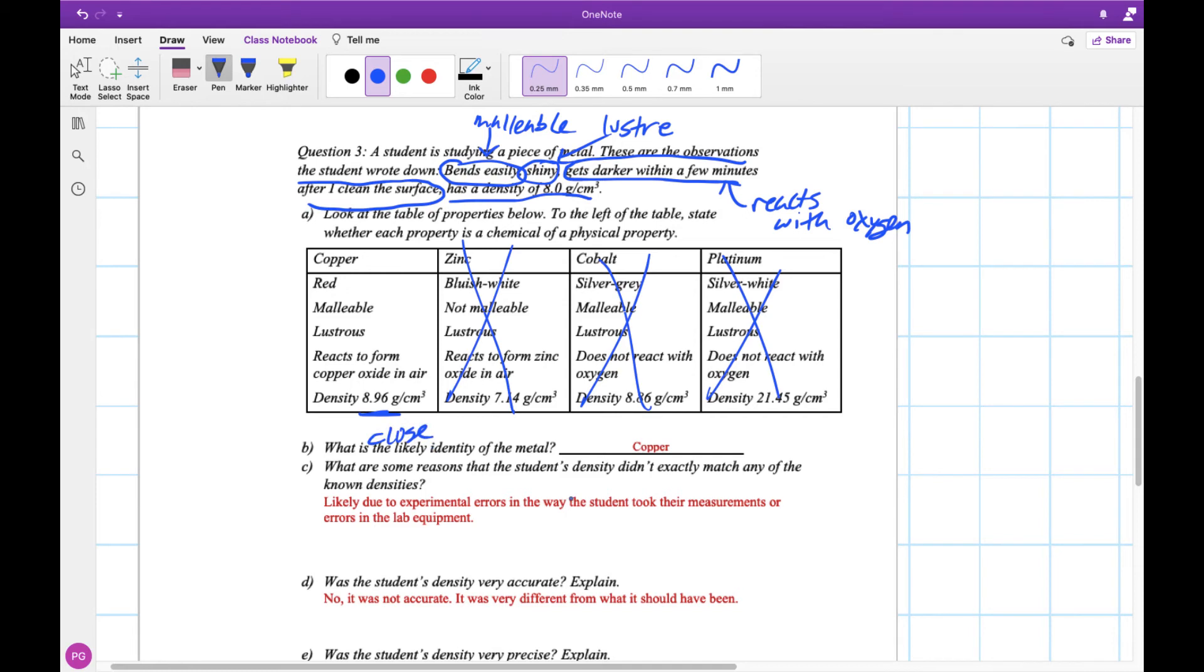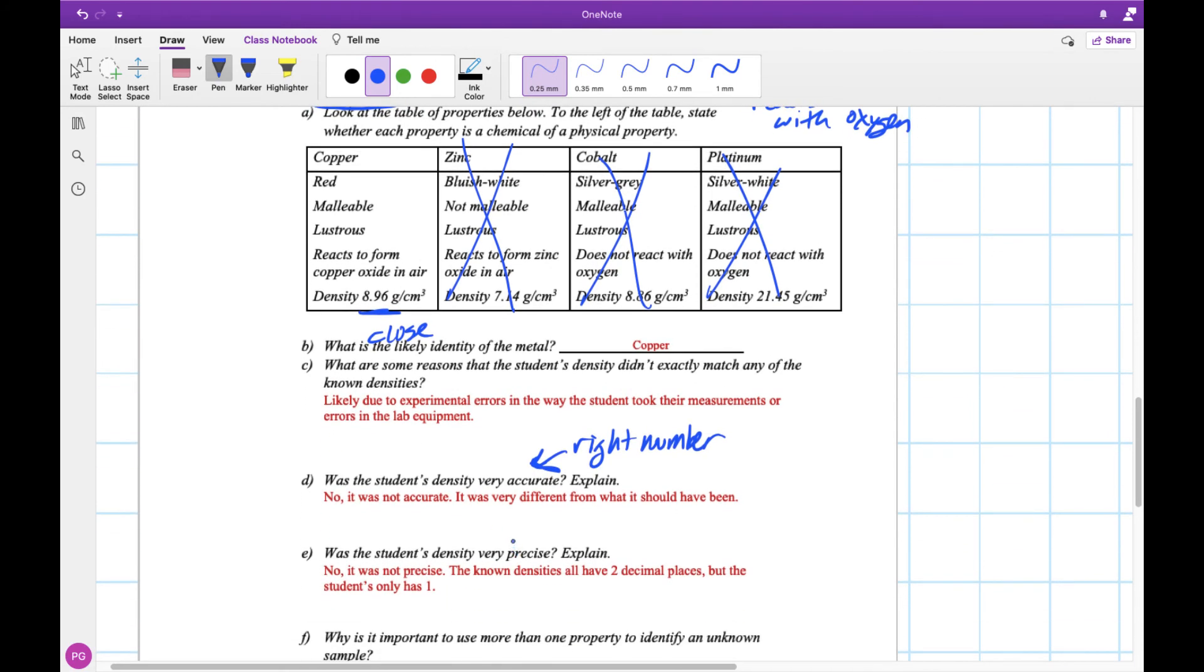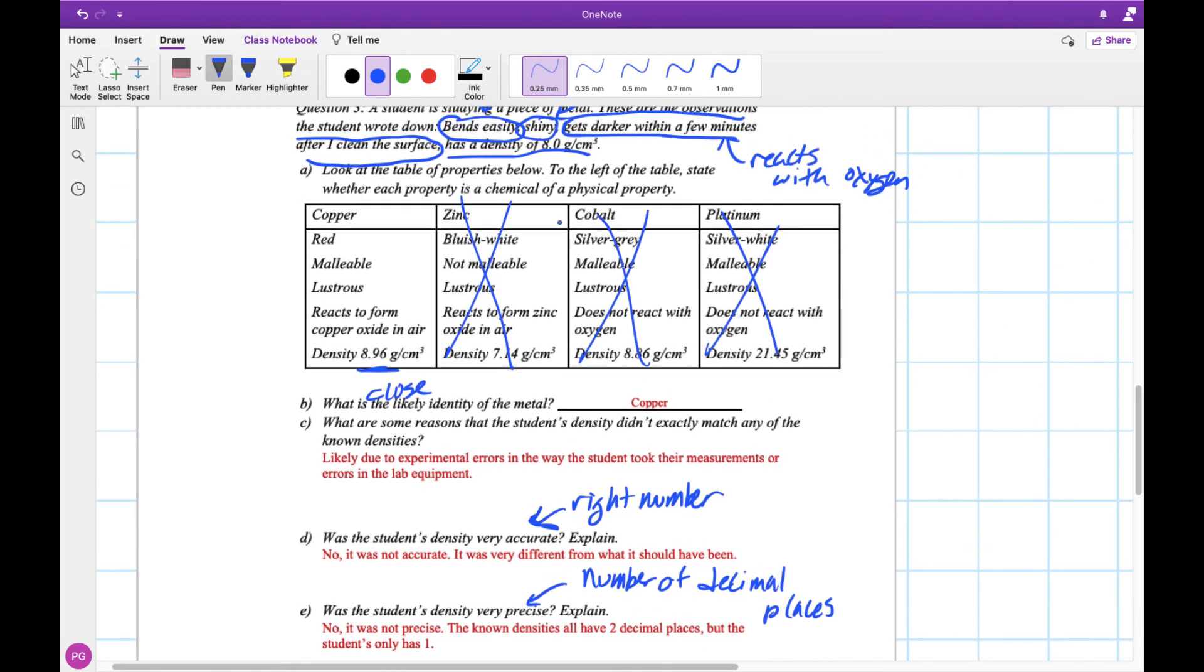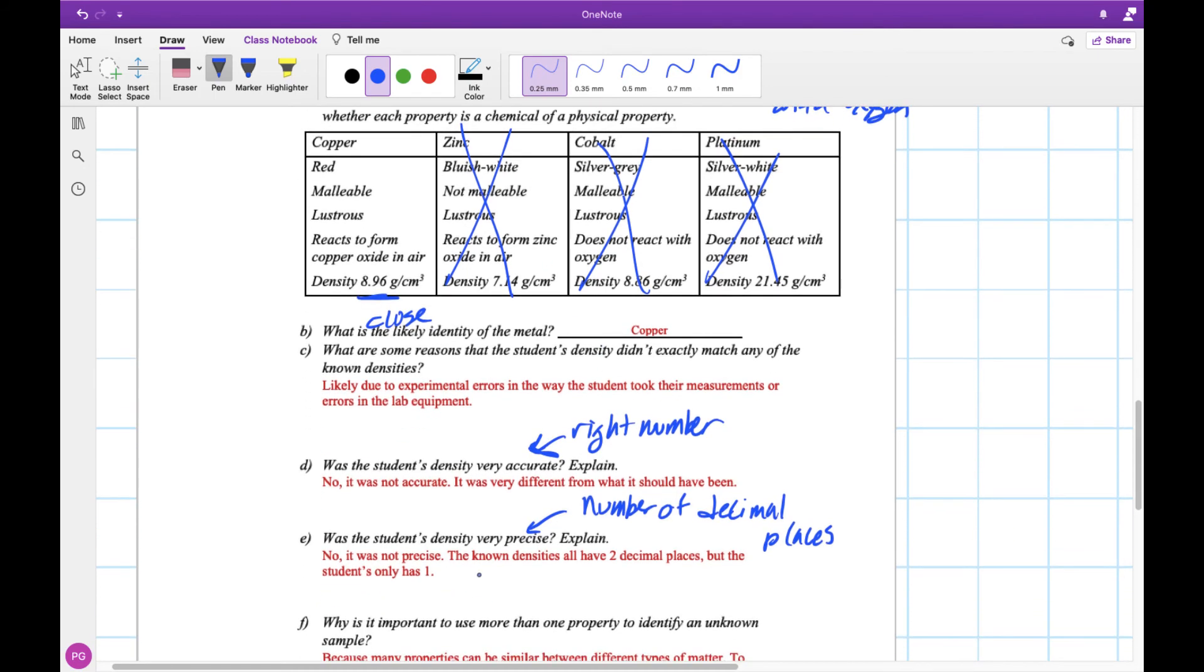And likely this is due to some experimental errors. So maybe the lab equipment wasn't working properly. Maybe they made some mistakes in their measurements or calculations. There's lots of different reasons why the density might be different. So was it accurate? It's not accurate. When we're talking about accurate, is this the right number? The idea of accuracy is, did they get the right number? Not really. It's quite different. It's almost a whole number off, 8 versus 9 almost. Is it very precise? Not actually that precise. Precise just is the number of decimal places. Our table had two decimal places, they only had one. So it's not very precise. They have one less decimal place than the table did.